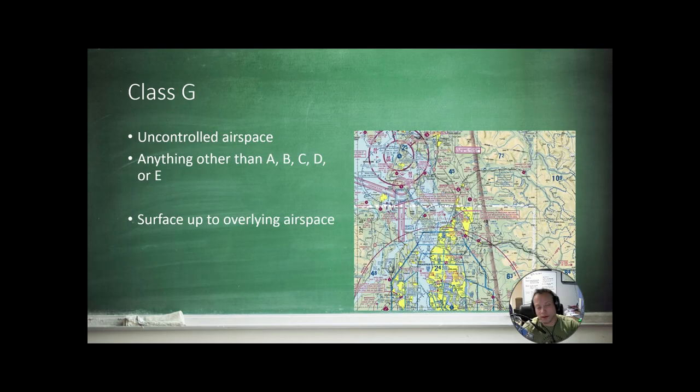Then there's Class Golf airspace. Again, this is technically uncontrolled airspace, so you're going to see drones and a bunch of other yahoos operating Class Golf. So that's anything other than these before, and it goes from the surface up to whatever else is above it. So on the hard side of this vignette, it's surface to 1,200 feet AGL. On the soft side, it's surface to 700 feet AGL.